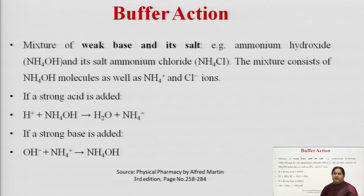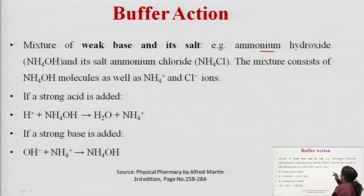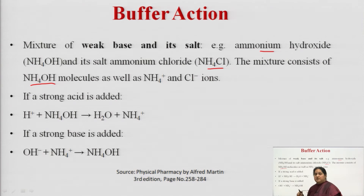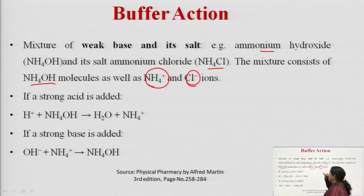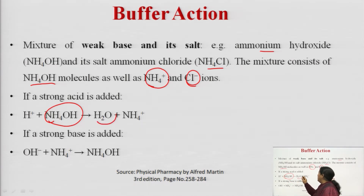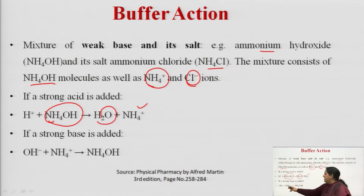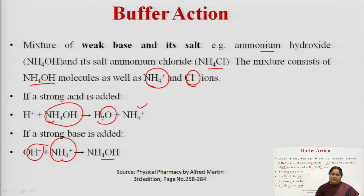For the mixture of weak base and its salt, we take ammonium hydroxide and ammonium chloride. The mixture gives molecules of ammonium hydroxide — since it is a weak base, dissociation is not much — along with ammonium ions and chloride ions. If a strong acid is added, ammonium hydroxide reacts with hydrogen ions to give water and ammonium ions. If a strong base is added, hydroxyl ions react with ammonium ions to give ammonium hydroxide. This is the buffer action.